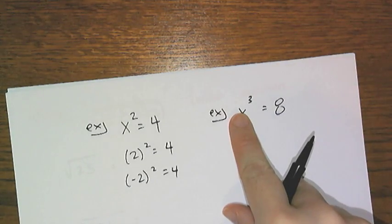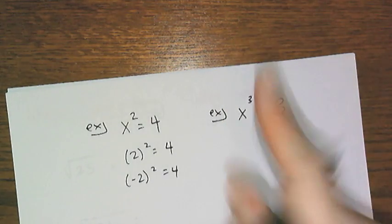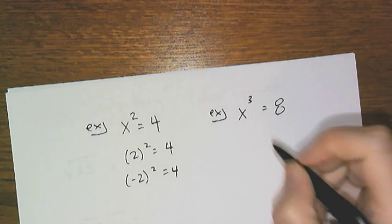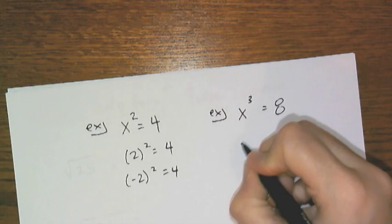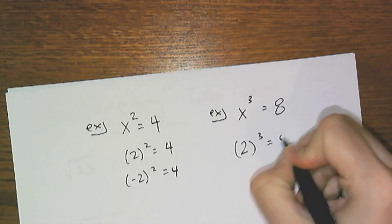But if I have some other equation that tells me x cubed equals 8, it's an odd index, which tells me I only have one solution. So the cube root of 8 is what x is. In this case, it's 2, because 2 cubed is 8.